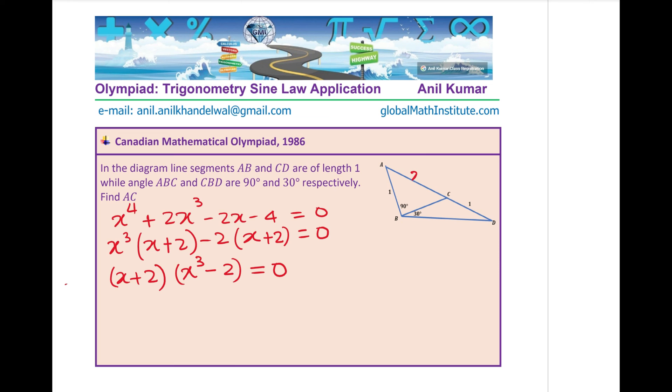We need to find this dimension X in the given triangle. Now, X is positive. We know X is greater than 0. And therefore, the only solution comes from X cubed minus 2 equals to 0, which gives us X cubed as equal to 2. Or, it gives you X as equal to cube root of 2. Correct? So, that is how we actually solve this particular question.